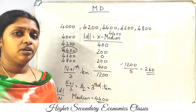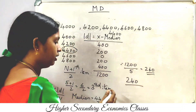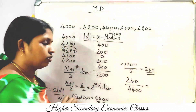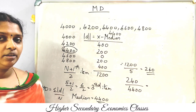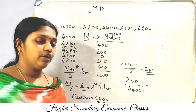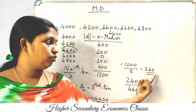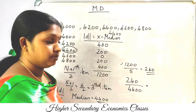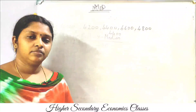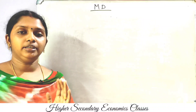Mean deviation equals 240. The coefficient of mean deviation equals mean deviation divided by median value. So coefficient of mean deviation equals 240 divided by the median, giving approximately 0.054. Mean deviation from the median can similarly be done for the discrete series and continuous series.